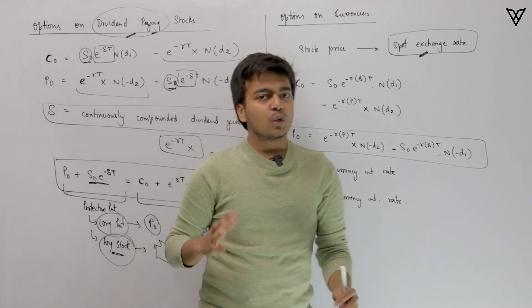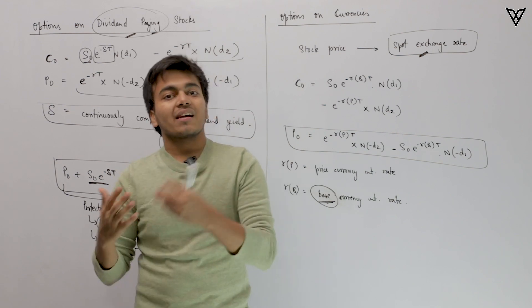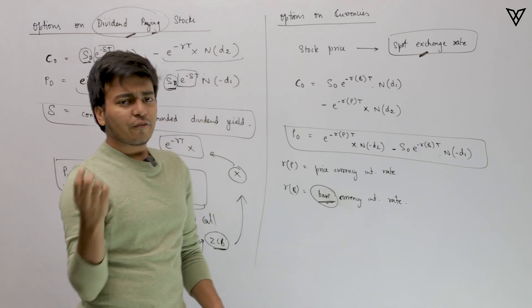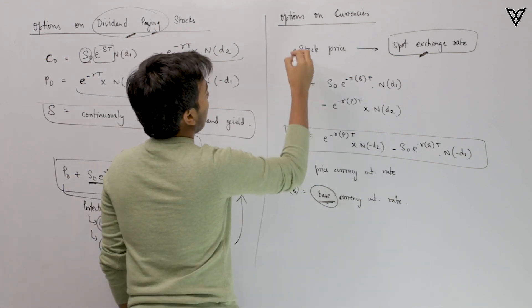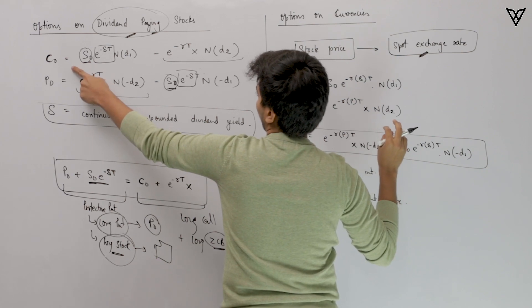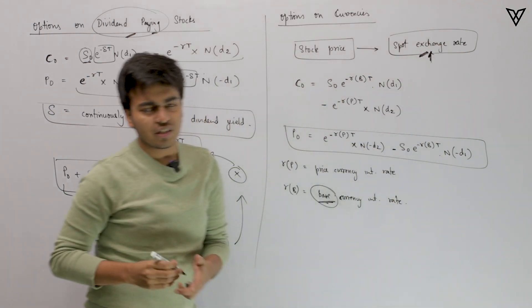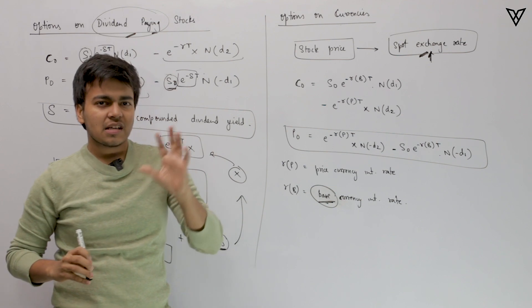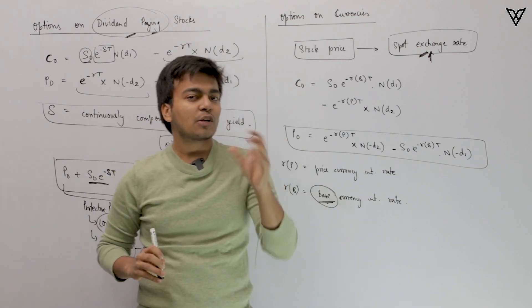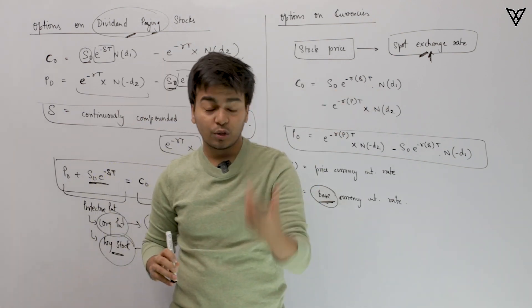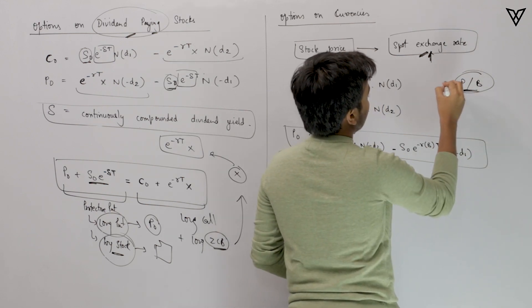Now, you can also use the BSM model for options on currencies. There are a few things to understand before looking at the formula. Wherever you see the stock price in the call and put option equations, you replace it with the spot exchange rate. The spot exchange rate is denoted as price currency per base currency (P/B). For example, if the price currency is rupees and the base currency is dollars, the rate would be 60 rupees per dollar — so 60 is the spot exchange rate.